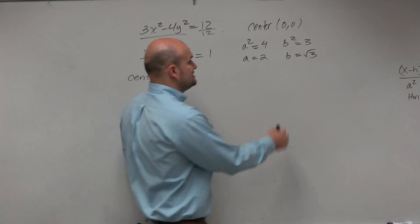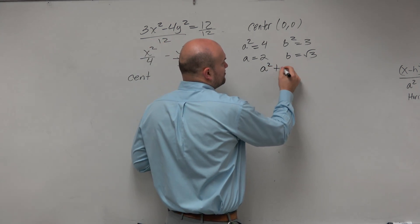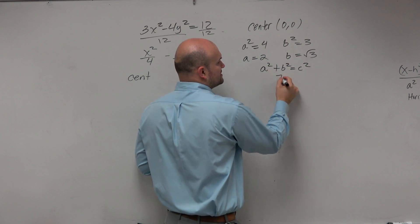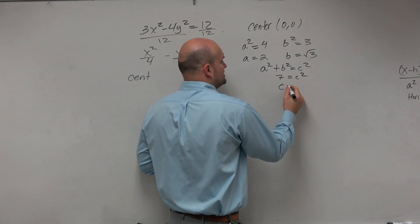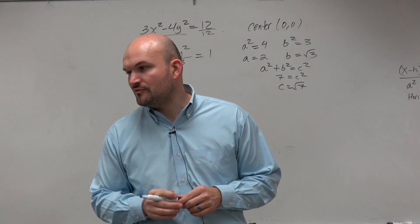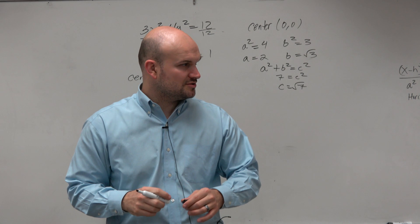And then if I wanted to find c squared, remember, it's a squared plus b squared equals c squared. So 4 plus 3 is 7 equals c squared. So therefore, c equals the square root of 7, which is 2.6457513. But we'll just leave it as the square root of 7.